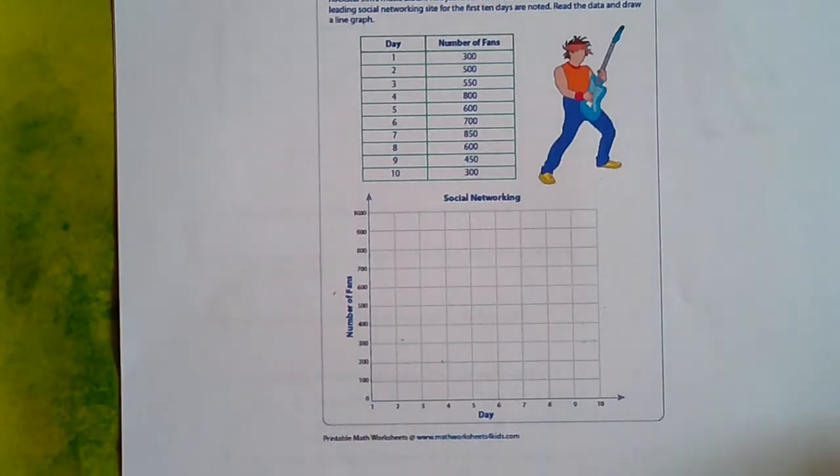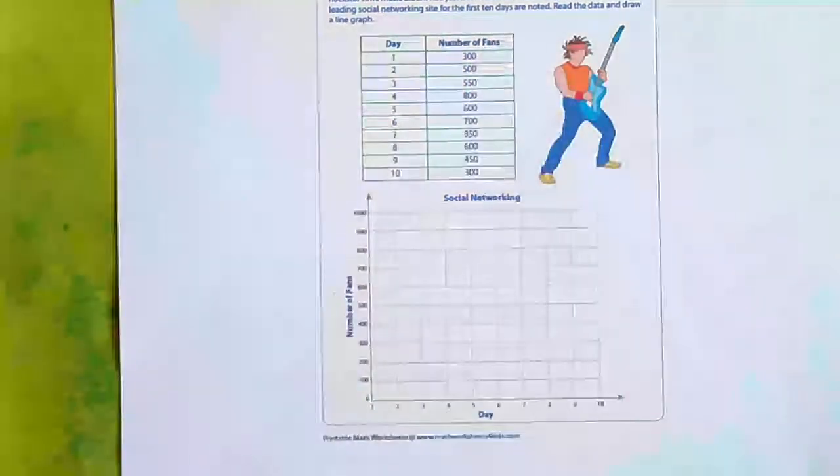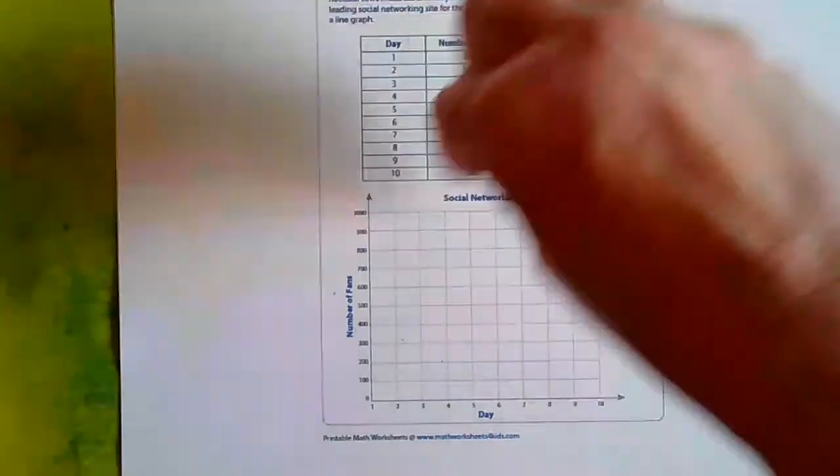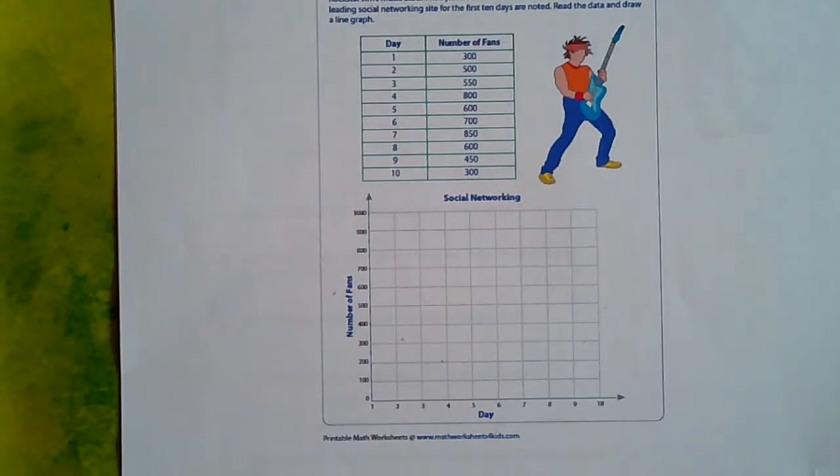Here is a blank graph and a data chart, and we are going to take the data off of this chart right here, this table, and we're going to put it right here and make a line graph. So this is our scenario. Rockstar Jim's music album has just been released. The number of fan followers from a leading social network site for the first 10 days are noted. Read the data and draw a line graph. Well, we can do that.